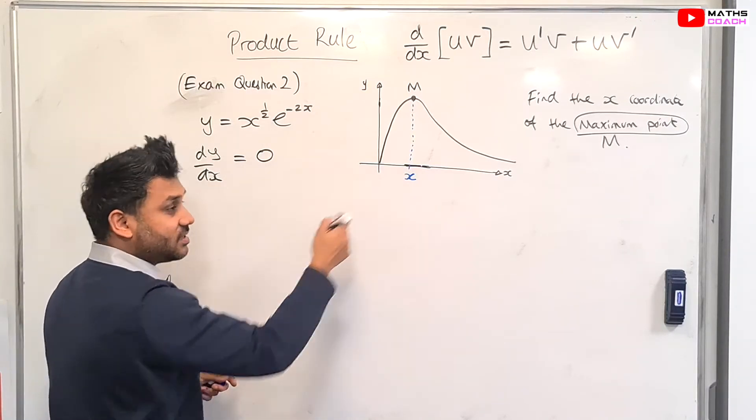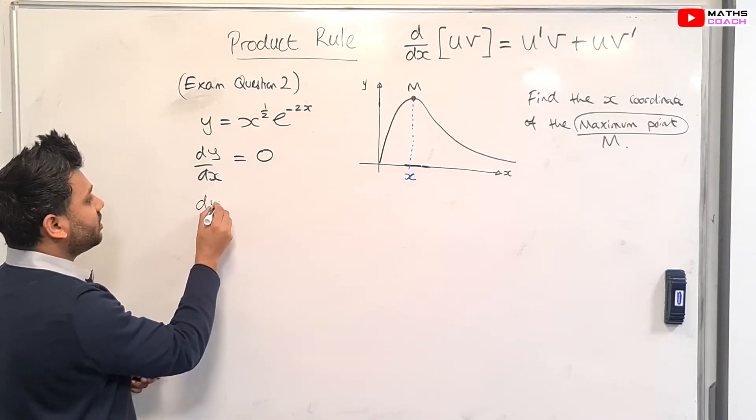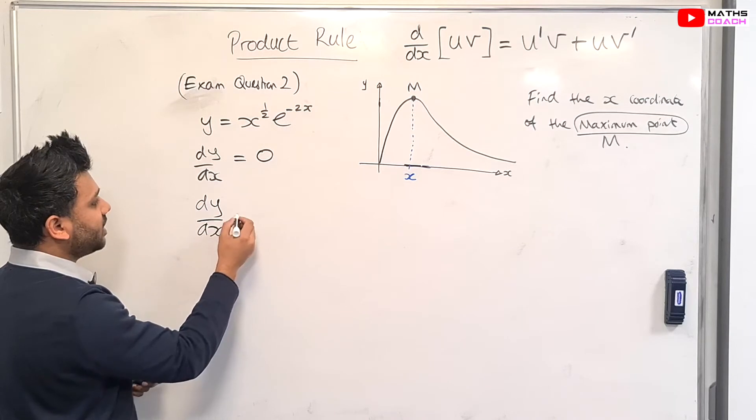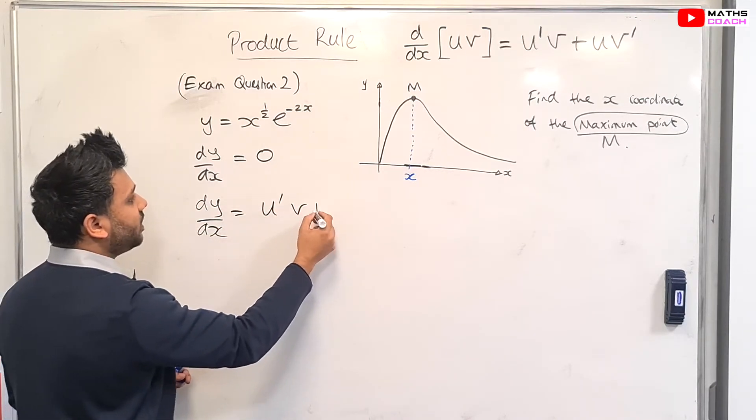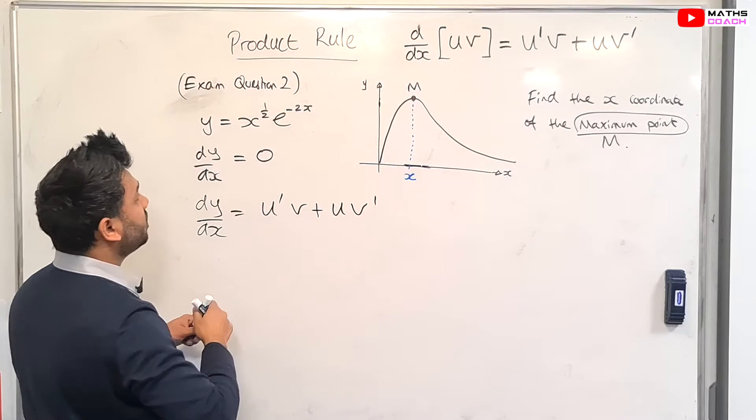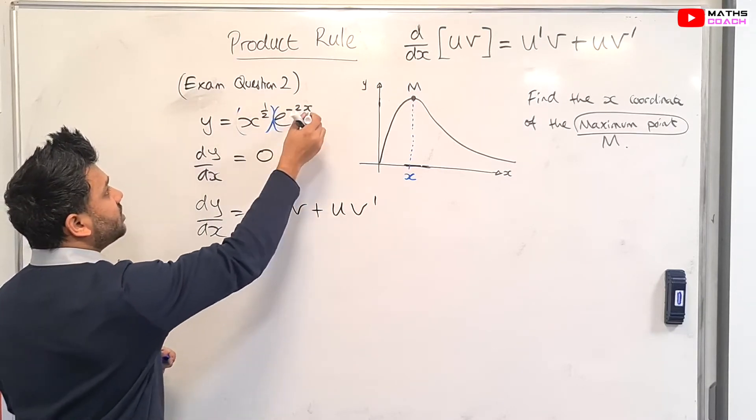And we can solve that equation to find what this x is. So start with dy/dx. Again, product rule, u'v + uv'. So this is our u and this is our v.